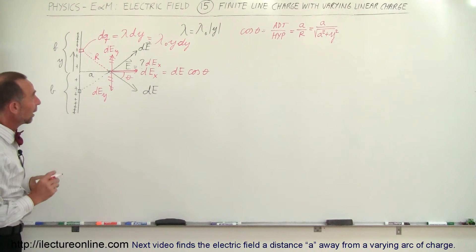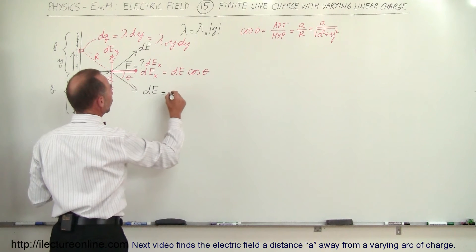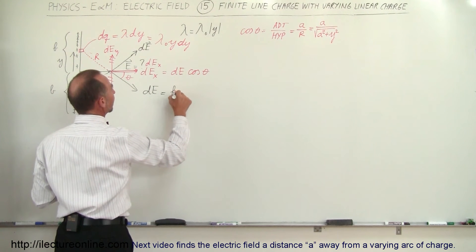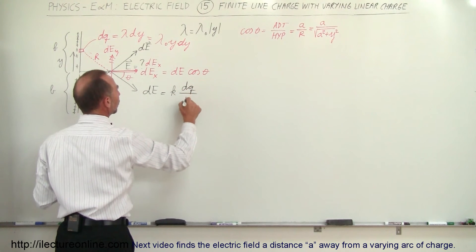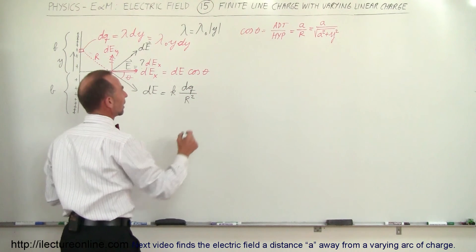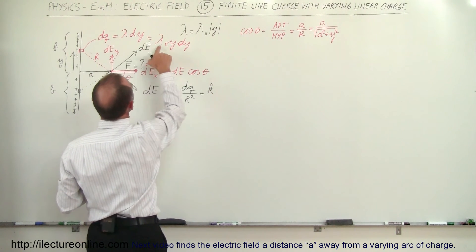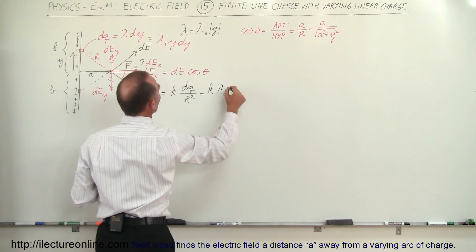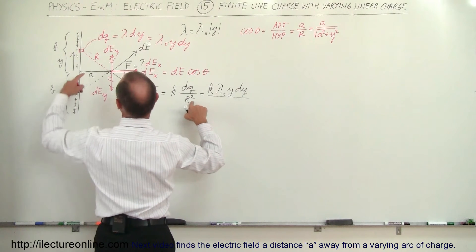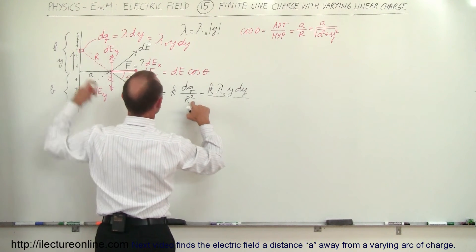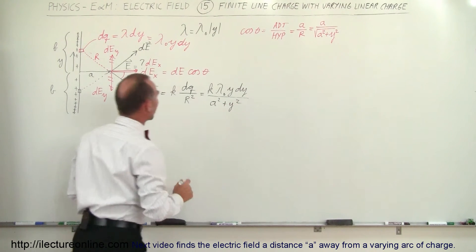Now we can write dE. By Coulomb's law, dE equals k times dQ divided by r². Substituting dQ = lambda-sub-naught times y times dy, and r² = a² + y², we get dE equals k times lambda-sub-naught times y times dy divided by (a² + y²).